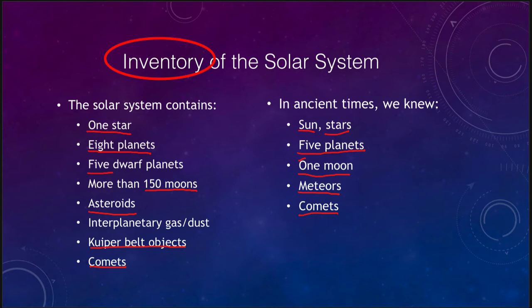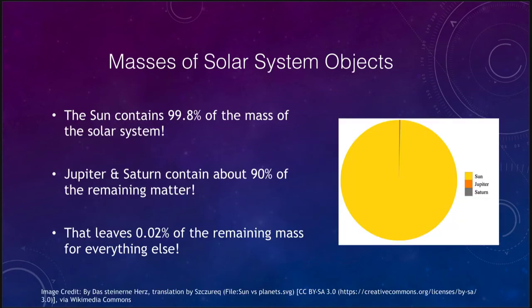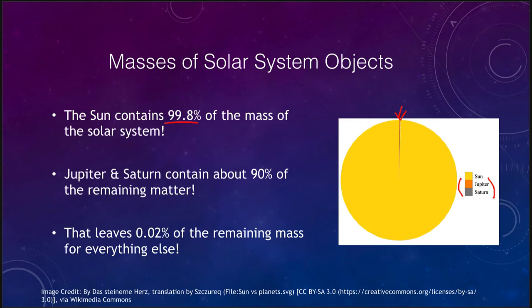Let's look at the masses of these objects. The Sun is essentially all of the mass of the solar system — 99.8% of it. In a chart, the yellow part represents the mass of the Sun, and the only planets that actually show up there are Jupiter and Saturn. They're the only ones massive enough to register. Jupiter and Saturn together would contain 90% of the mass that remains after you take out the Sun.